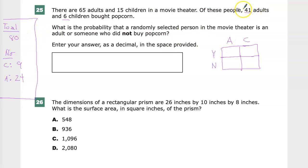So for my adults, I have 41 who did and my no's would be 24. For my children, I have 6 that did and 9 who did not.